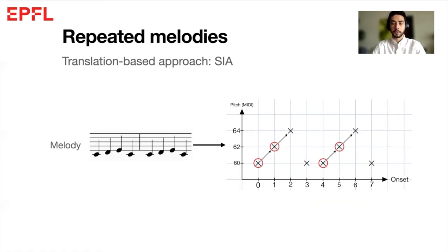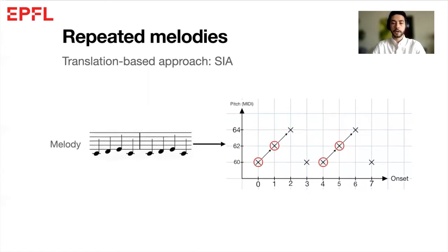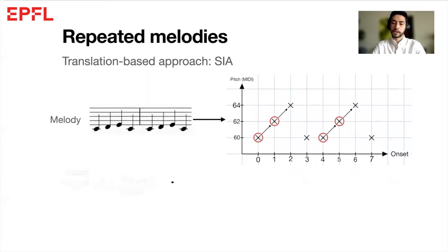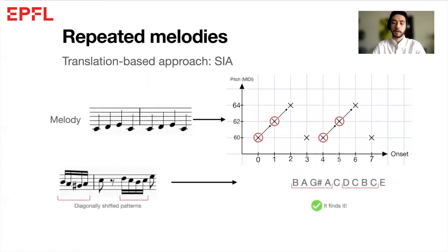We can see that some notes can be translated into other notes using the same vector each time. For example, the notes circled in red could be a pattern, which differs from the perfect match we found earlier. So when it comes to diagonally shifted patterns, we see that this time it does work.